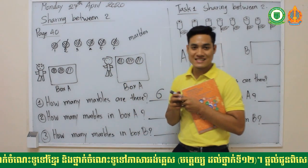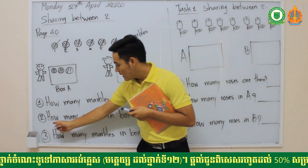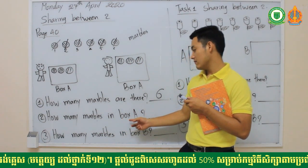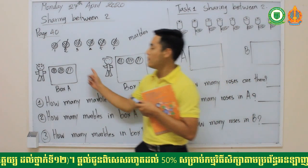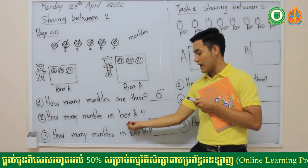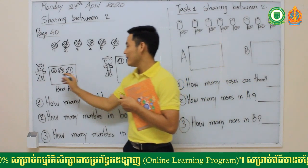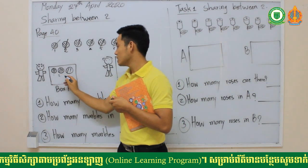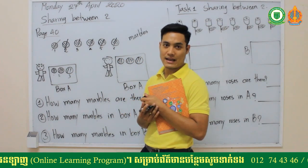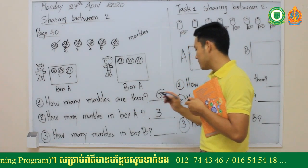Now go to the second question after sharing: how many marbles are in box A? Let's count: one, two, three. So how many marbles in box A? The answer is three marbles.